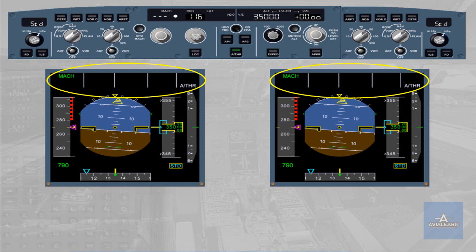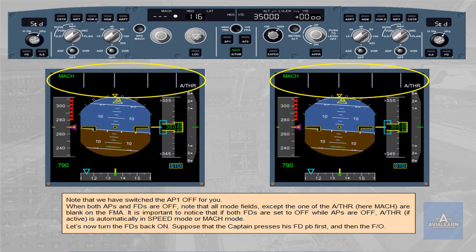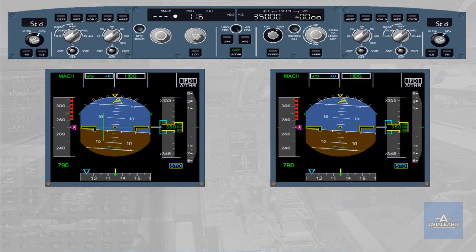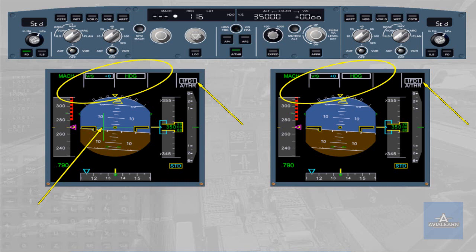Let's now turn the FDs back on. Suppose that the captain presses his flight director push button first, and then the first officer. Flight director 1 is on. The crossbars are displayed on PFD 1. The FMA on both PFDs indicates '1FD-' as flight director engagement status, meaning that only flight director 1 is on. Notice that flight director 1 push button illuminates in green on the EFIS control panel.